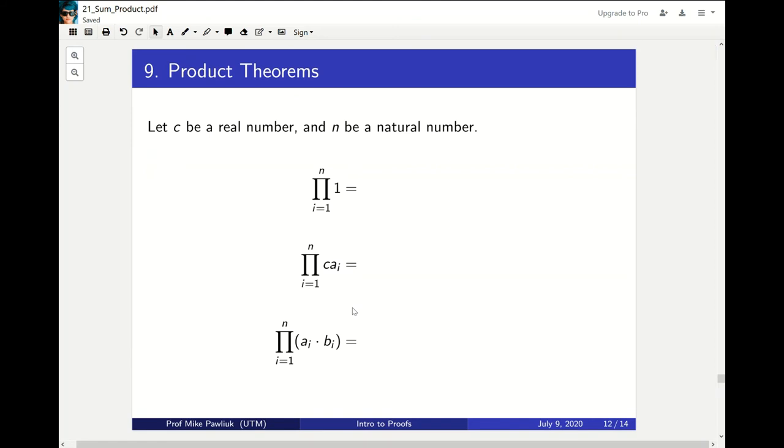Now let's go to the product theorems for product notation. So again, let c be a constant and let n be a natural number. What is this product? Well, it's the product of a bunch of ones, it'll just be one.